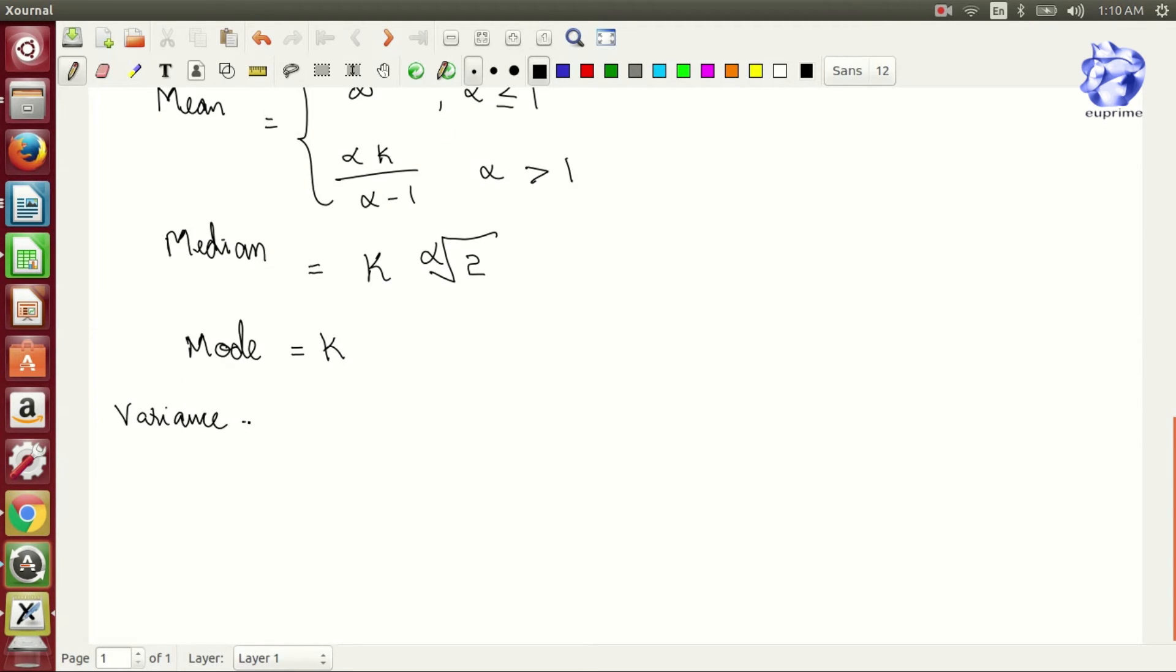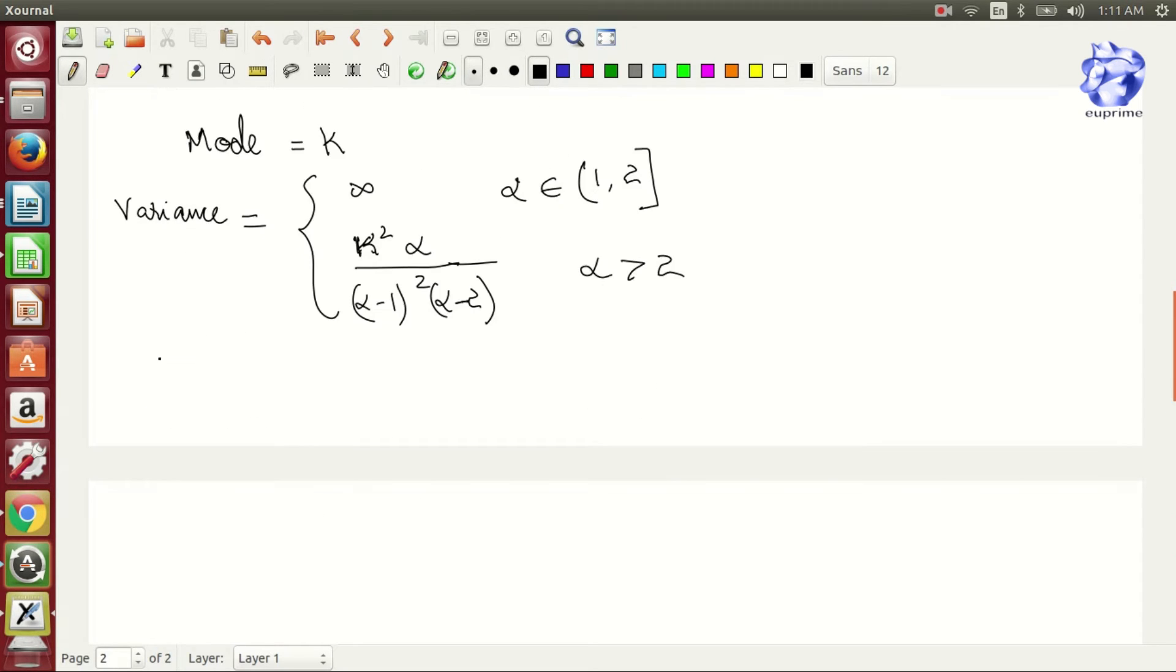The variance is infinity if alpha belongs to the interval (1, 2], and K squared times alpha divided by (alpha minus one) squared times (alpha minus two) for alpha greater than two.